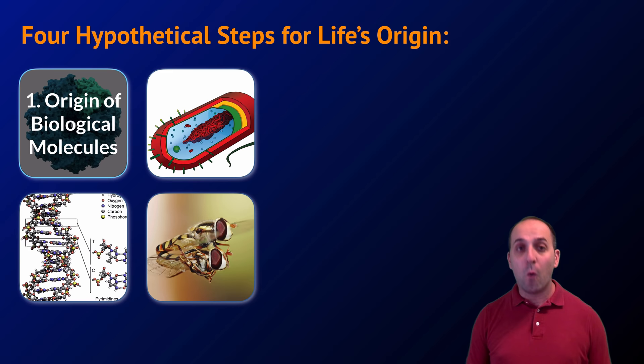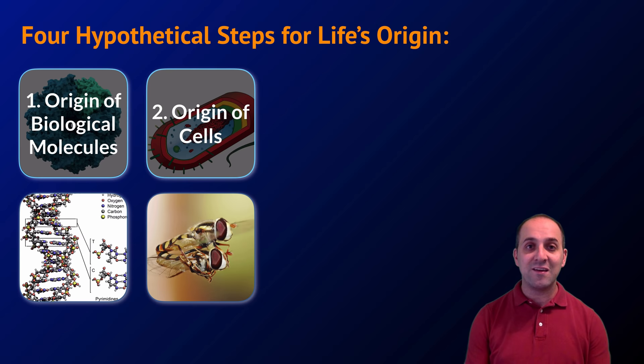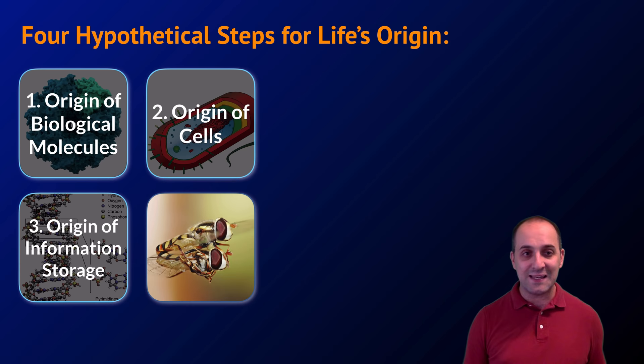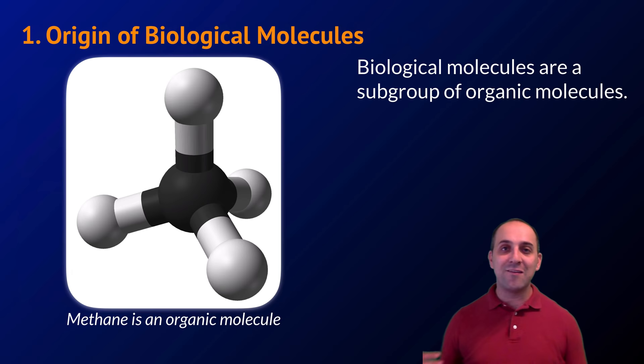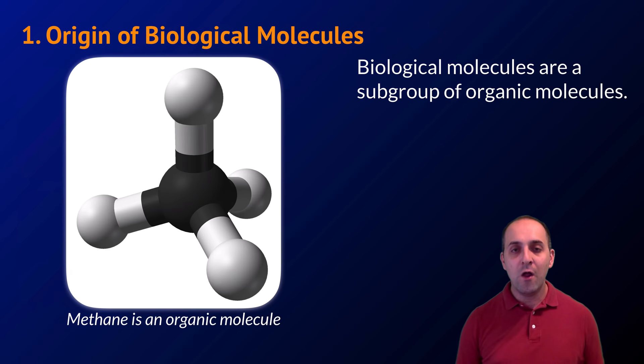Taking the abiogenesis starting point — that life originated here on Earth — four things have to happen: first, the origin of the biological molecules that life is made of; second, those molecules need to organize into cells; third, we need an information storage molecule (our modern DNA plays that role); and fourth, everything needs to reproduce.